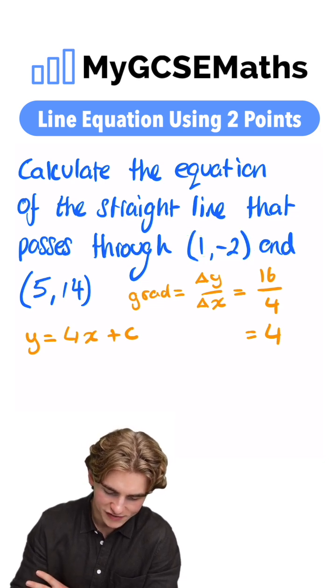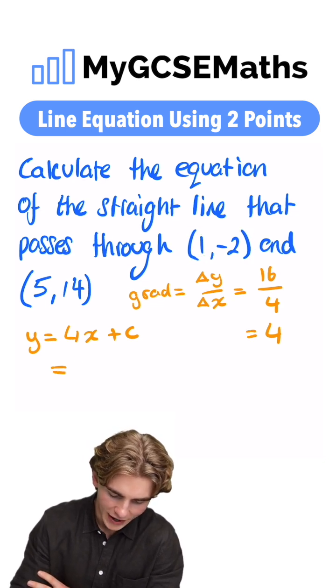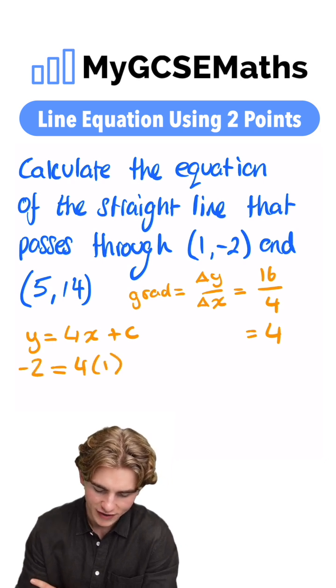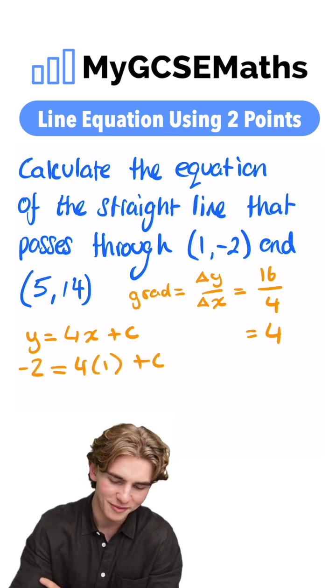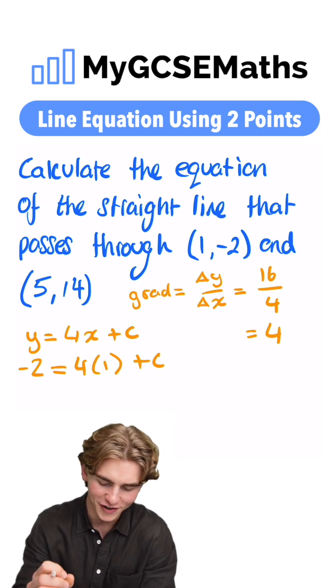So we know that when x is equal to 1, we're going to have 4 times 1. y is going to be equal to -2. So we have -2 in there for the y plus c. I did that in a bit of a funky order but hopefully it made sense. So what can we do now?